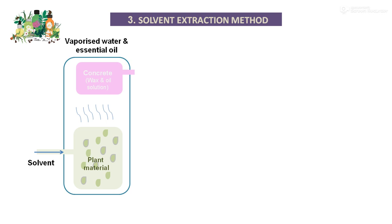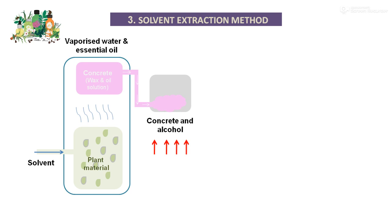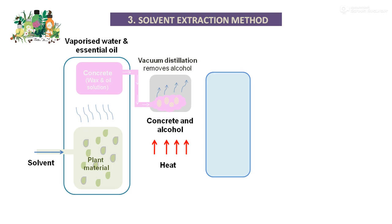This concrete is the vaporized form along with the essential oil, containing waxes — that is, fats or oils. This concrete is then collected into the vacuum distillation unit. In the vacuum distillation unit, we add alcohol, and when we supply heat, through the process of vacuum distillation, the alcohol is removed.